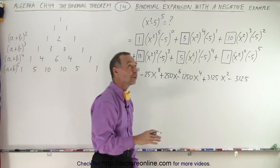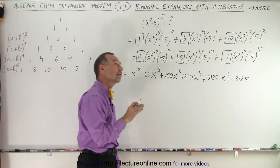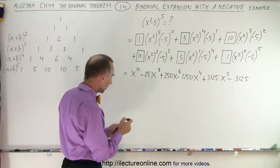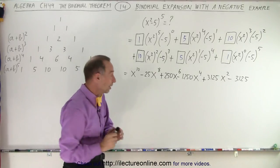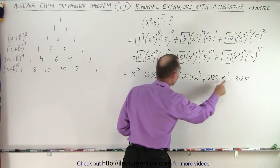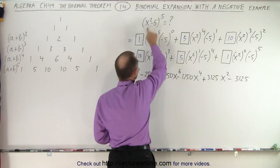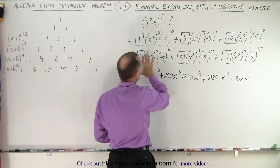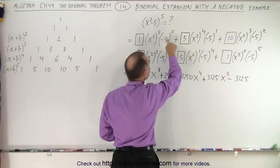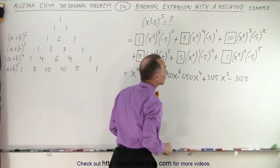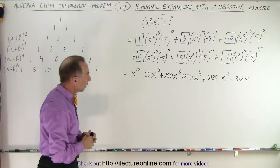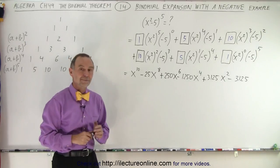Finally, x squared to the zero power is simply 1, times minus 5 to the fifth power — we get a negative, and 5 to the fifth power is 3,125. Let's check: 5, 125, 625, 3,125. Yes, that is correct. So here's our binomial expansion. Notice we still end up with positive, negative, positive, negative, positive, negative — just what we expect from having a negative term. We worked it out in detail, letting the exponent take care of the sign. And that is how it's done.